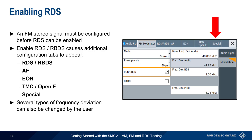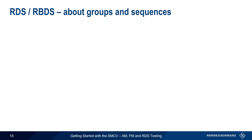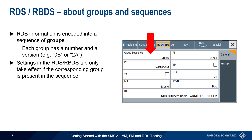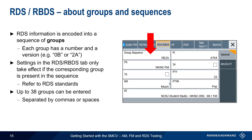Note that several types of frequency deviation are also user configurable. One very important concept in RDS is groups, since RDS information is encoded into a sequence of groups. Groups are identified by a number and a version, for example 0B or 2A. The settings we'll be describing will only take effect if the corresponding group is present in the sequence. Up to 38 groups can be entered, separated either by commas or by spaces, and once configured, the group sequence is cycled through continuously.